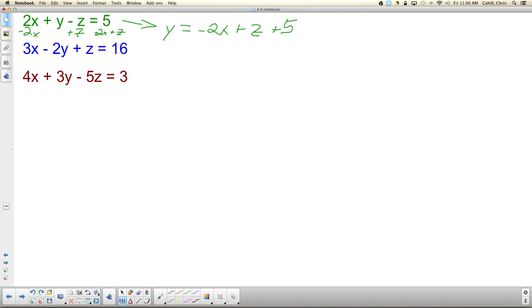So what do I do with that? Plug it in. Plug it in where? The blue or the red. So in here we get 3X minus 2 times negative 2X plus Z plus 5 plus Z equals 16. Now I get 4X minus 3 times negative 2X plus Z plus 5 minus 5Z equals 3.